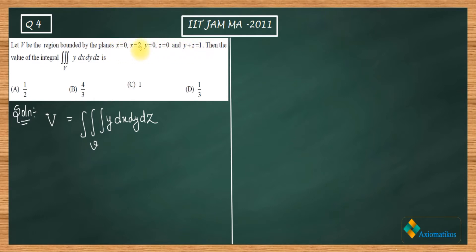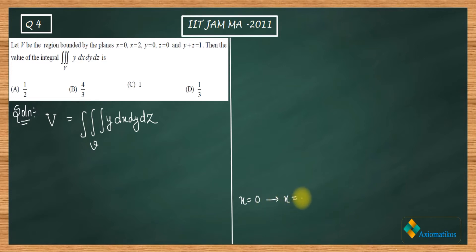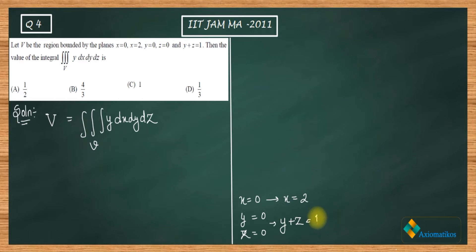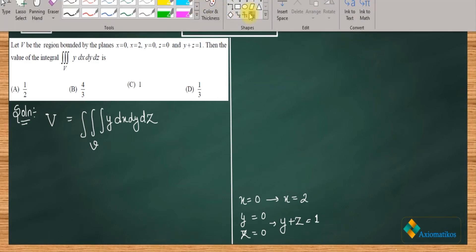So x=0, x=2, y=0 — these are the planes we need to draw first. x is varying between 0 and 2, y is from 0, and z is from 0. The constraint y+z=1 defines another plane. These are the planes given to us, so now let me draw a three-dimensional system.